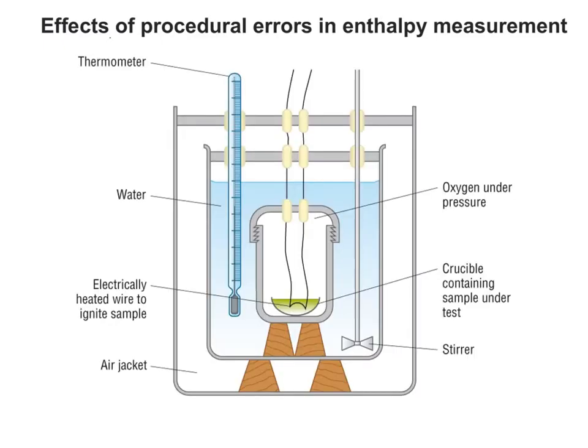Hello and welcome to this clip on looking at the effects of procedural errors in enthalpy measurement. Normally when the enthalpy change of combustion of a substance is measured industrially, such as with the food industry, it's done by something like this — a bomb calorimeter.